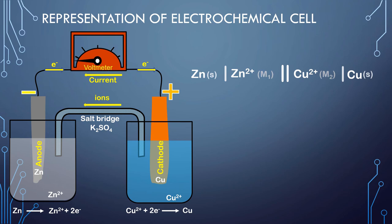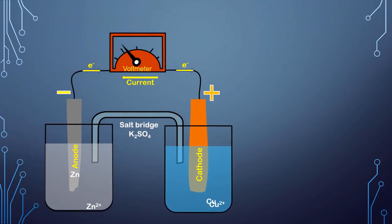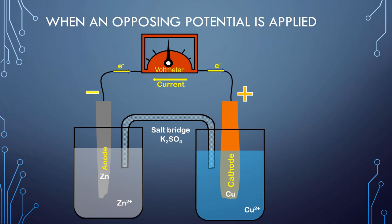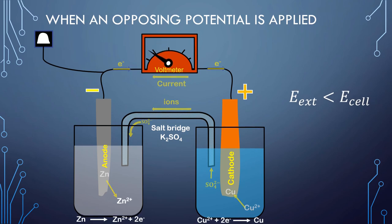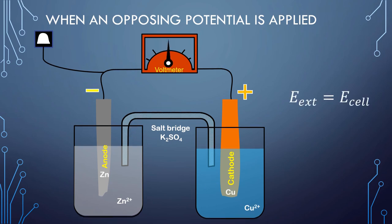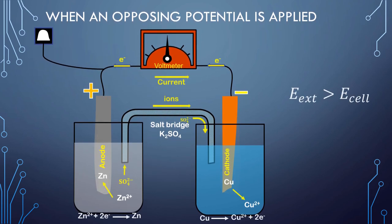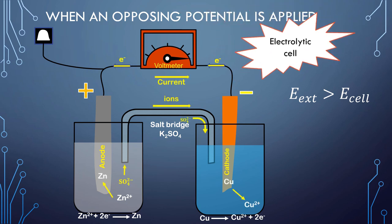If an increasing external potential is applied to the cell, the reaction continues to take place so long as the external potential is less than the potential of the cell. When the external potential equals the cell potential, the reaction stops and the current becomes zero. On further increasing the external potential, the reaction starts again but in the opposite direction, which also means that the current now flows in the opposite direction — the cell now acts as an electrolytic cell.